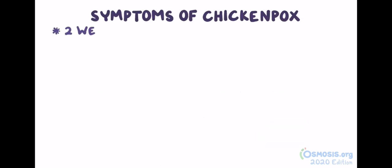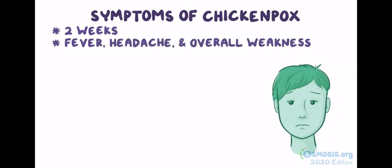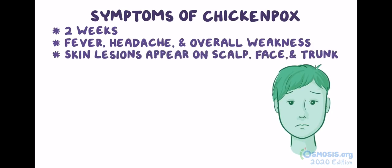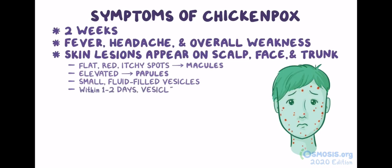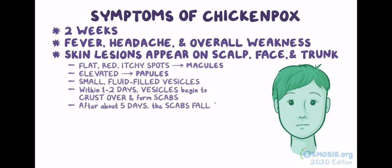Symptoms of chickenpox begin about two weeks after it enters the body. The infection usually causes a fever, headache, and overall weakness. After a couple of days, skin lesions start to appear on the scalp, face, and trunk. At first, there are flat, red, itchy spots called macules. Over time, they become elevated and develop into papules, and then into small, fluid-filled vesicles. Within one to two days, the vesicles begin to crust over and form scabs. After about five days, the scabs fall off, usually without leaving a scar.